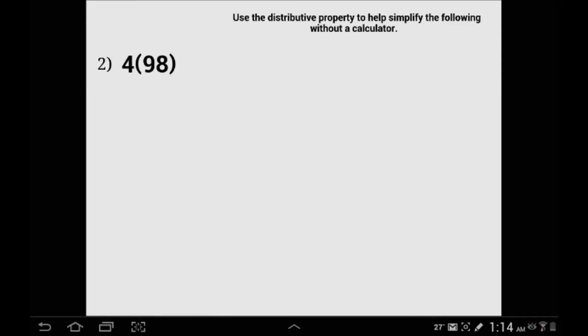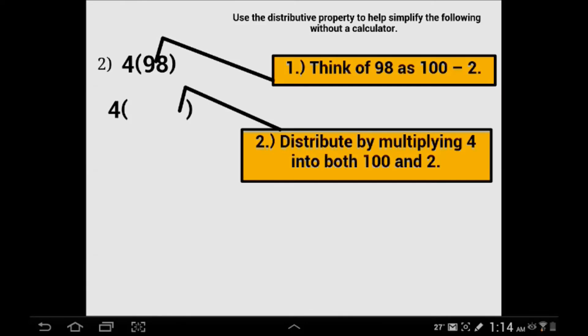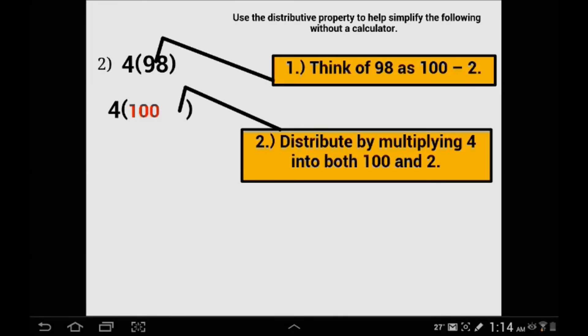Our next example takes a different look at this. Instead of looking at 98 as 90 plus 8, we are going to think of it as 100 minus 2 because 98 is very close to 100. This is another way to look at distributive property besides just addition. We are going to break it down as 4 times (100 minus 2), which is exactly the same thing.